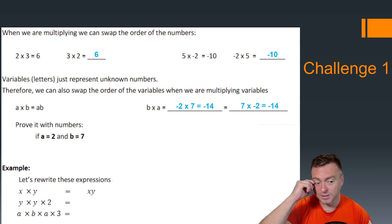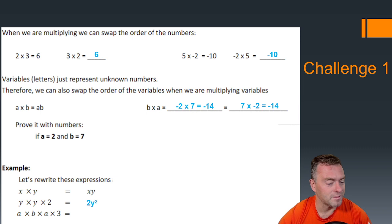And the last one here, just to fix those up, instead of saying y times y times 2, a better way of saying that is 2y². And similarly down here, it's better to write 3a²b.